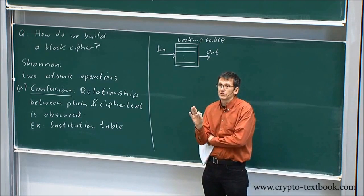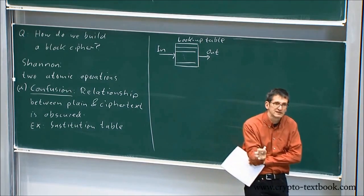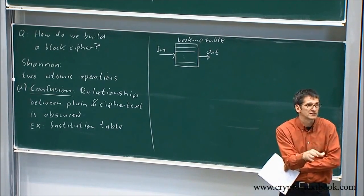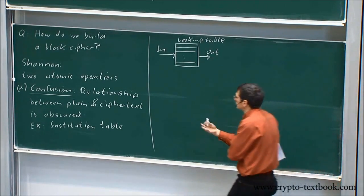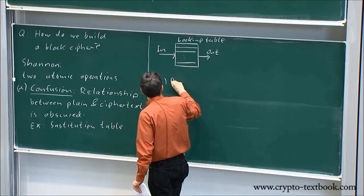But he said this is not enough, which is not surprising because we know the Caesar cipher by itself is not strong. He said you should also do something else, which is called diffusion.